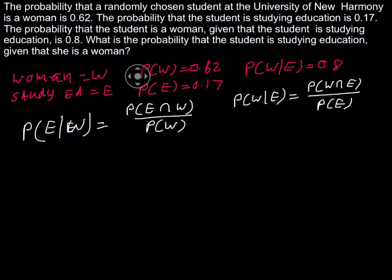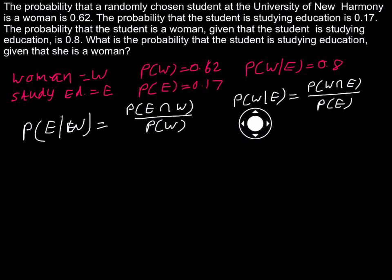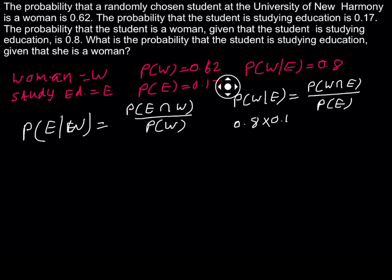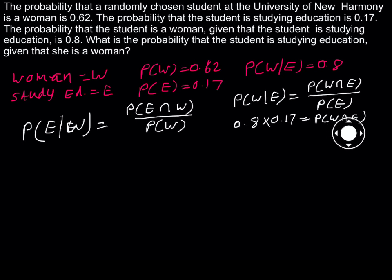We have information here. What is the probability of W given E? It is 0.8. We multiply that by the probability of E, which equals 0.17. This gives us the probability of W and E. So P(W ∩ E) equals 0.8 multiplied by 0.17.